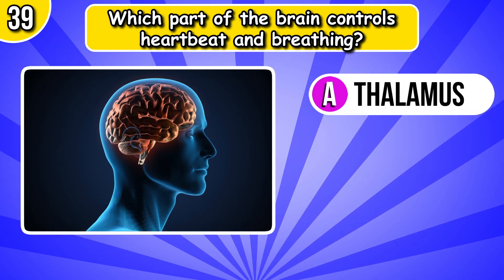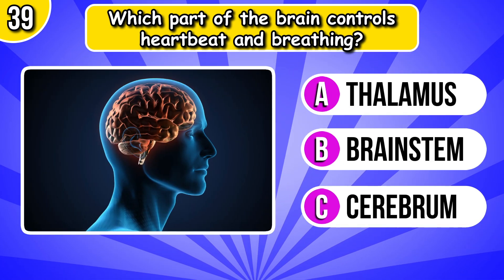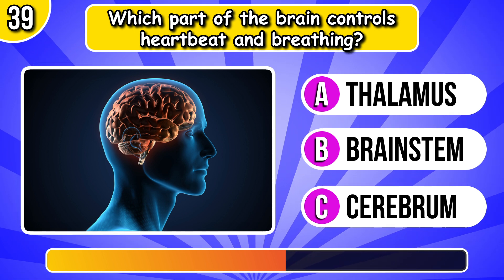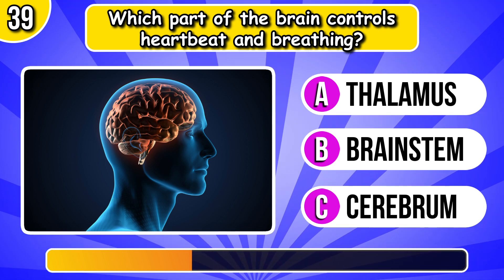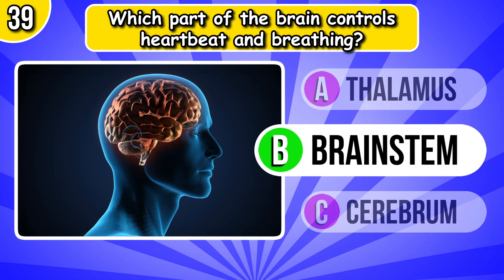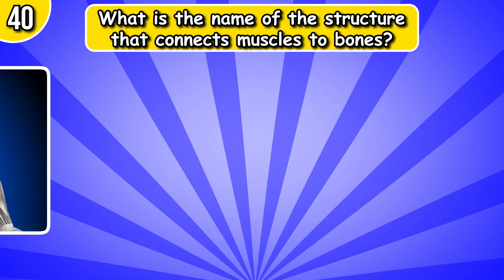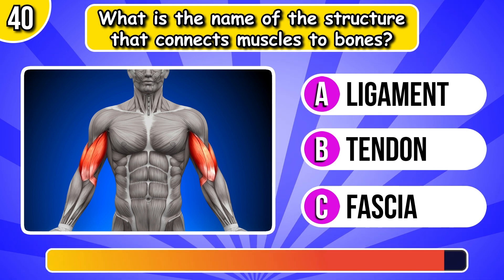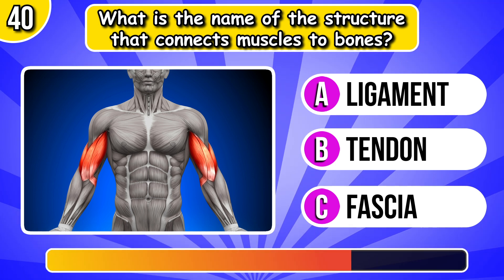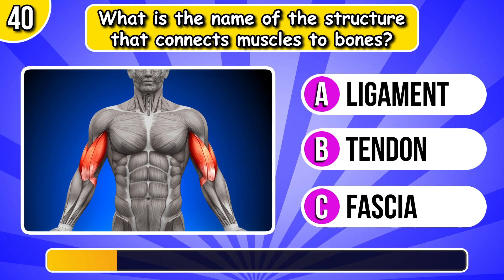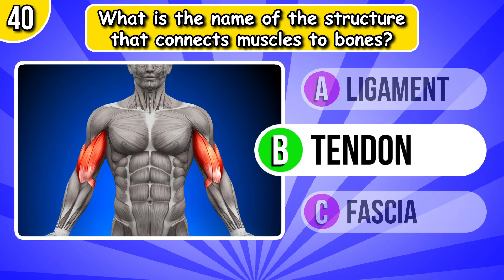Which part of the brain controls heartbeat and breathing? It's brainstem. What is the name of the structure that connects muscles to bones? Tendon.